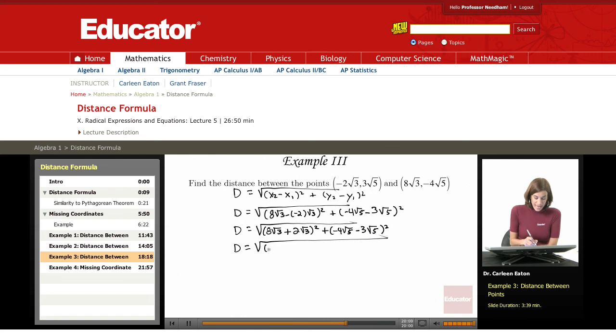So this is going to give me 8 plus 2, radical 3, and this entire thing is going to be squared, plus negative 4, minus 3, times radical 5, and this entire thing is going to be squared.